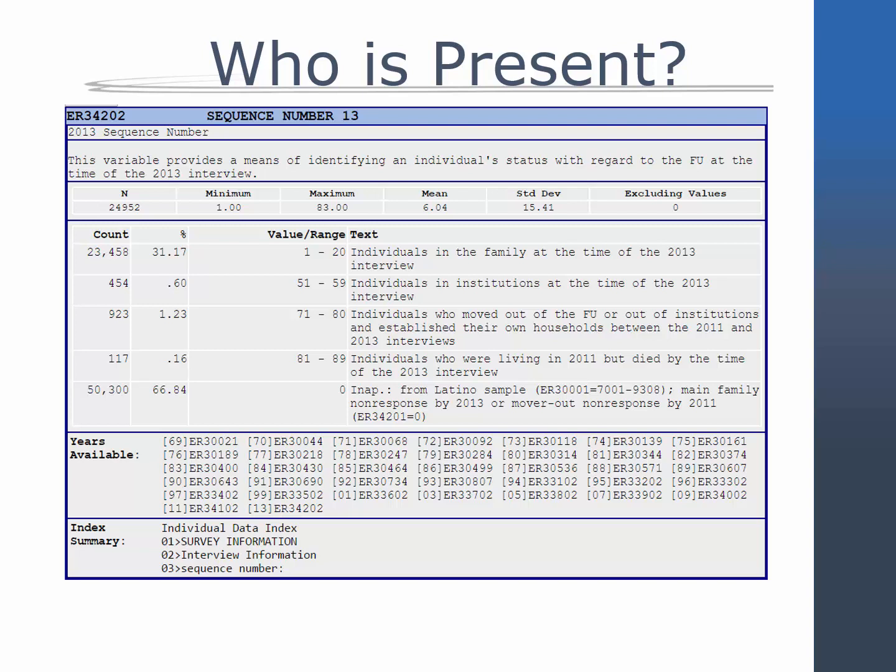The sequence number allows you to identify an individual's status with regard to the family unit and determine family composition change. Individuals currently in the family unit will have values from 1 to 20, while those in institutions, those who have moved, or those who have died between waves will have a sequence number in the range of 51 to 89.